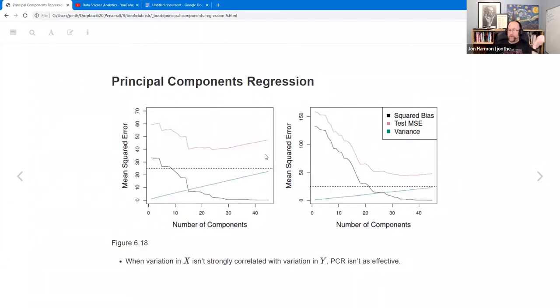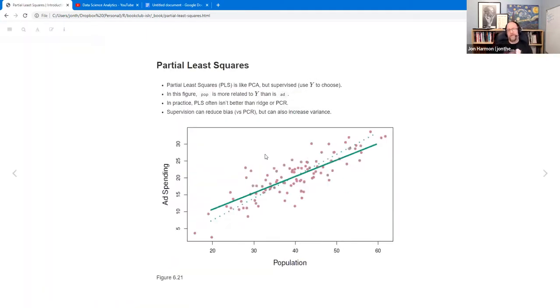So when it's not strongly correlated, PCR doesn't do very well. So that's why there is partial least squares. Partial least squares is like PCR or PCA, but it's supervised. So you use Y to help you choose where that line is. So here the dotted line is where the first principal component and the solid line is the first PLS. And in this case, population matters more than ad spending. And so it's a little bit more weighted, matters more than ad spending for the thing you're trying to predict. You're trying to predict sales in this case. So for that thing, population is more important. So you weight your first PLS component towards population a little bit.